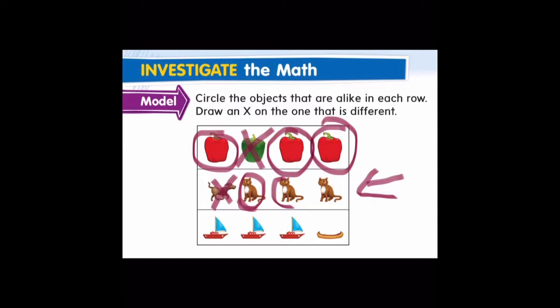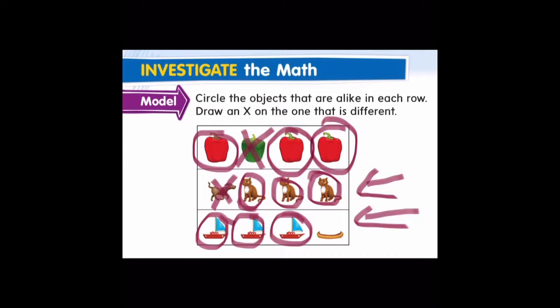Now let's take a look at the last row. Which objects are alike? Good job — the sailboats are alike. And which object is different? The canoe is different, so we're going to put an X.